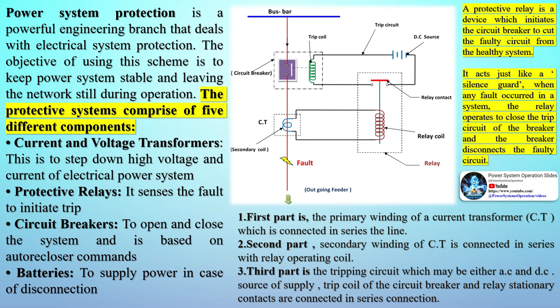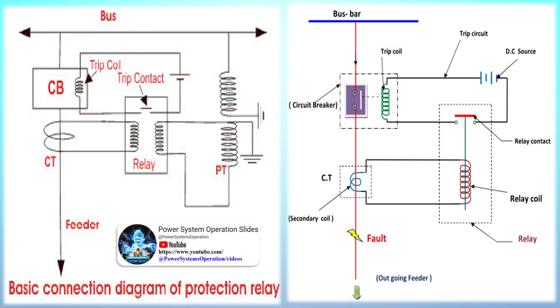The special equipment adopted to detect such possible faults is referred to as protective equipment or protective relay, and the system that uses such equipment is termed as a protection system. A protective relay is the device which gives instruction to disconnect a faulty part of the system. This action ensures that the remaining system is still fed with power and protects the system from further damage due to the fault.